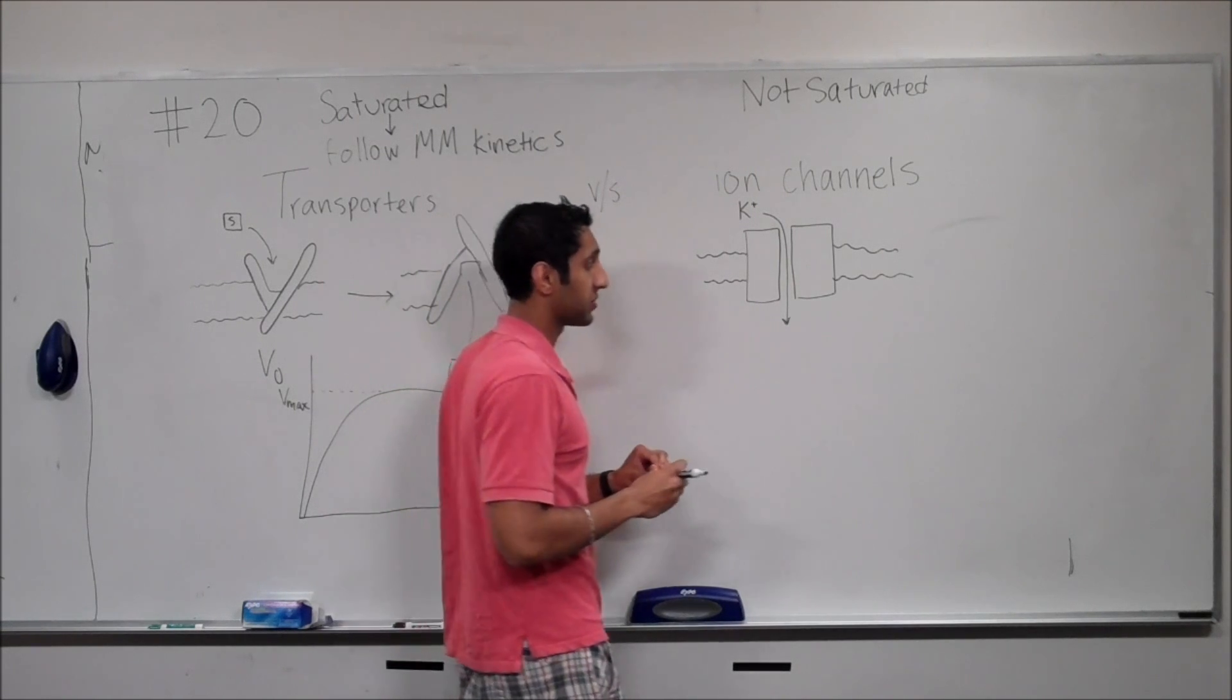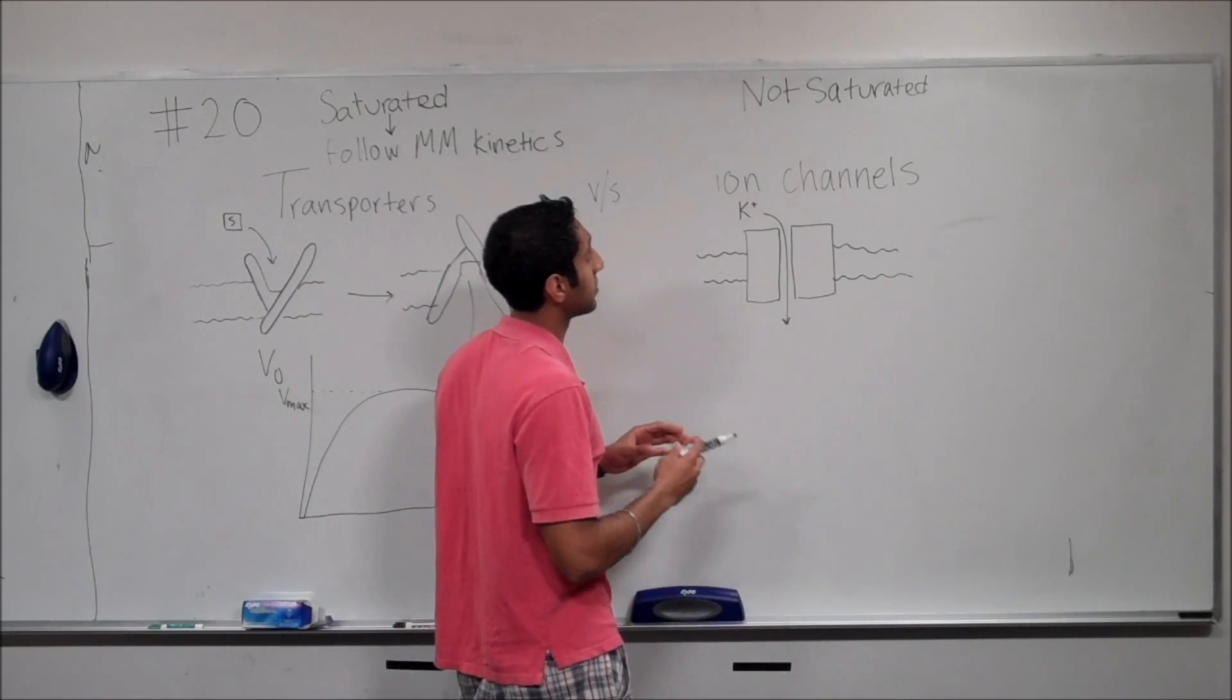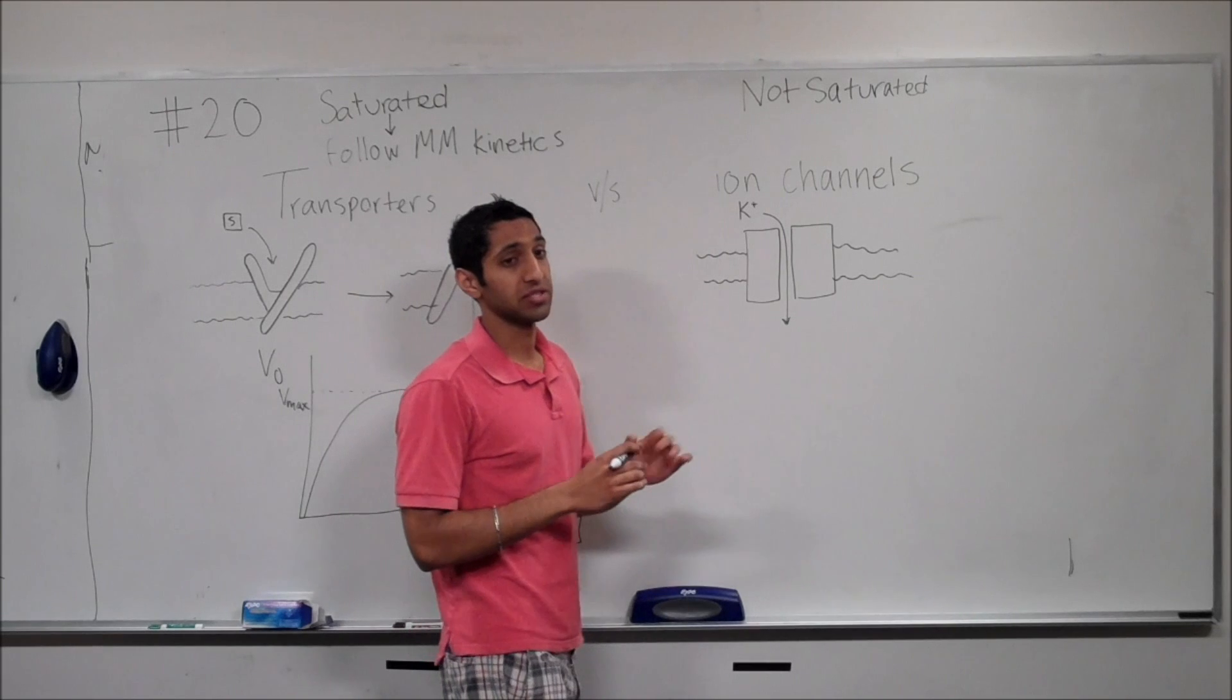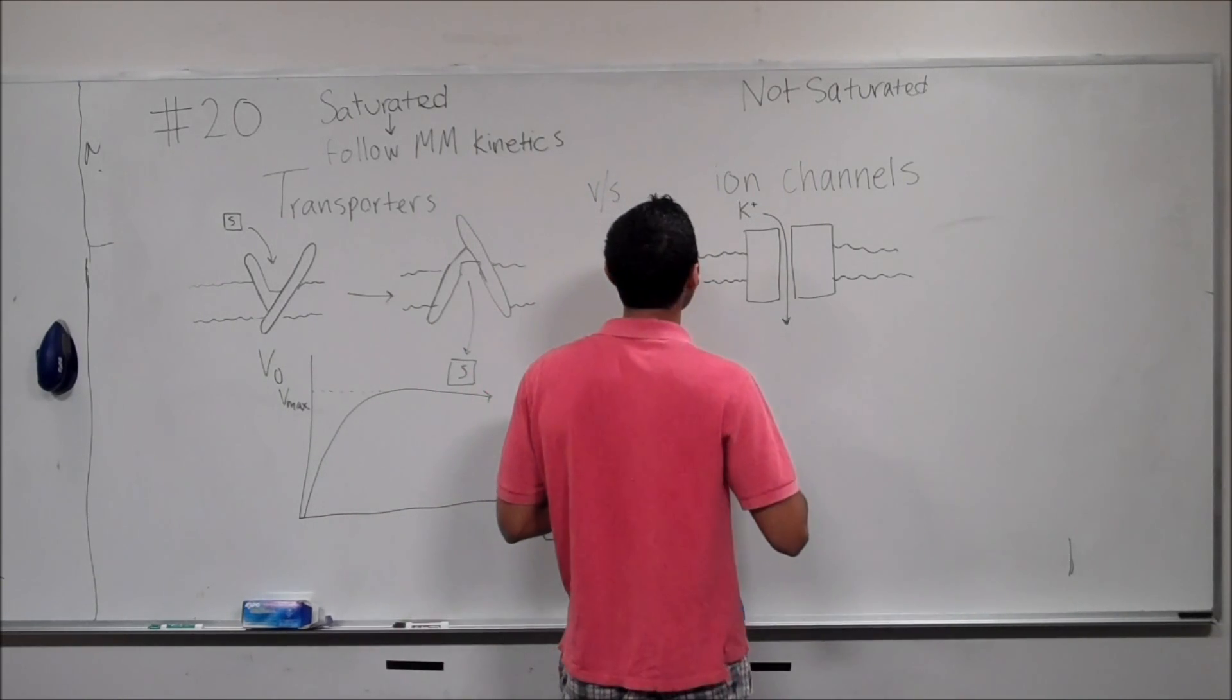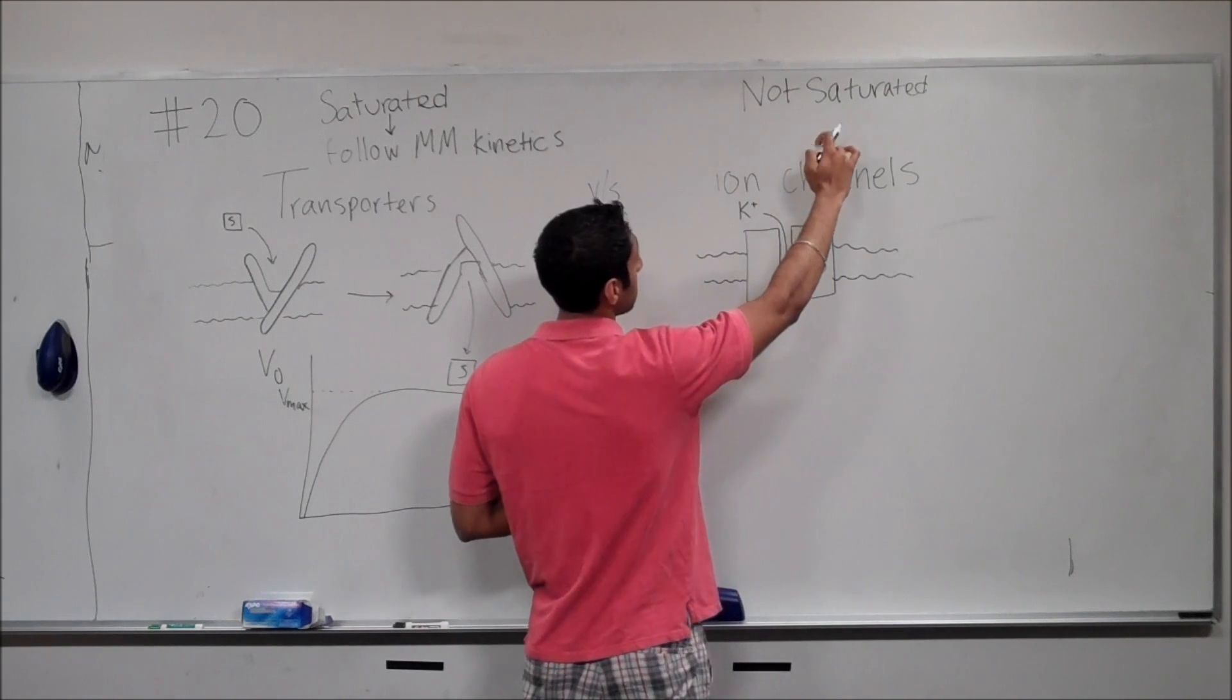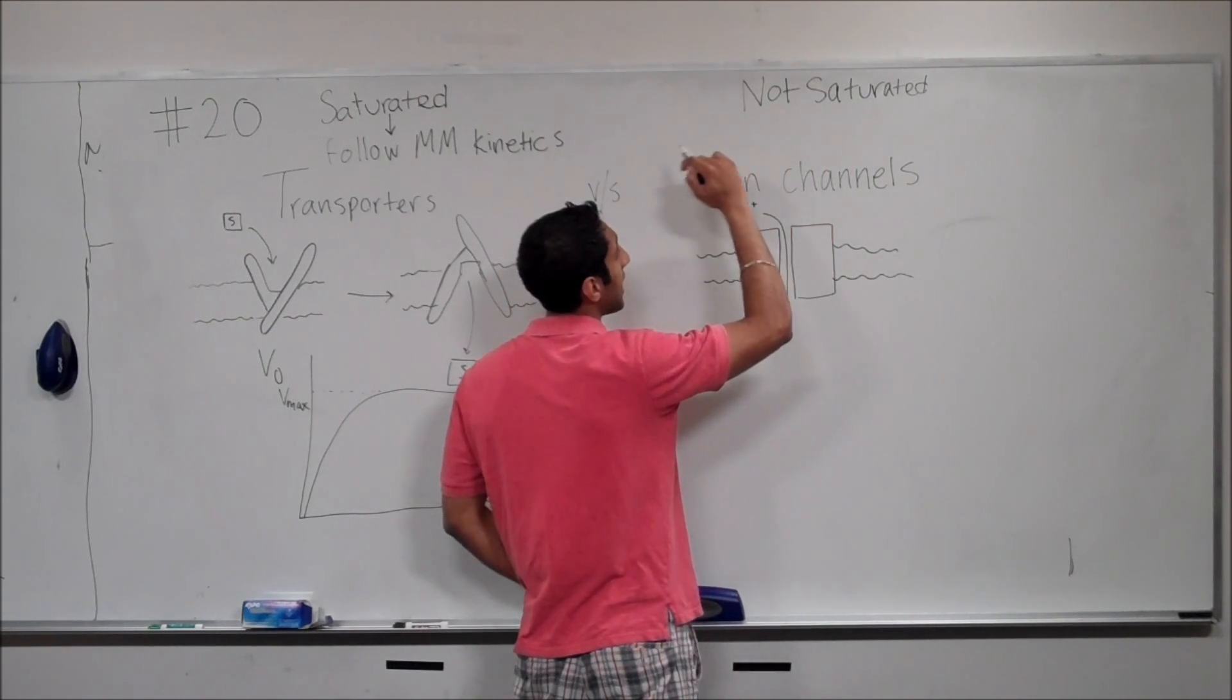So, for all intents and purposes, in the context of cells and what functions they have for ion channels, they never really get saturated. And because they do not get saturated, they do not necessarily have a Vmax.